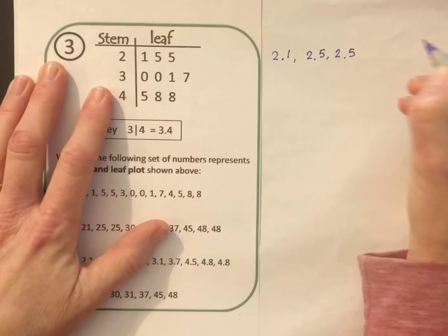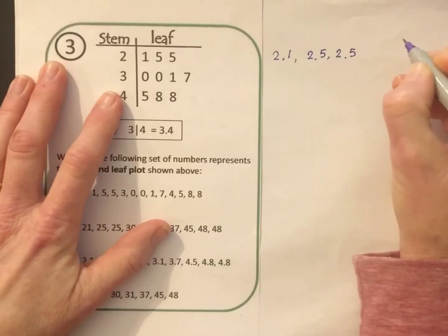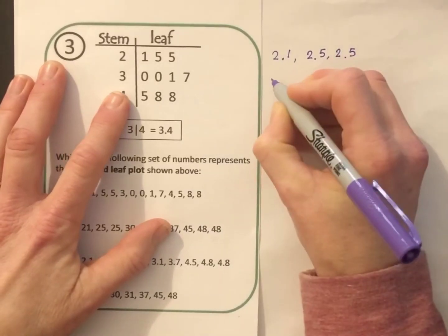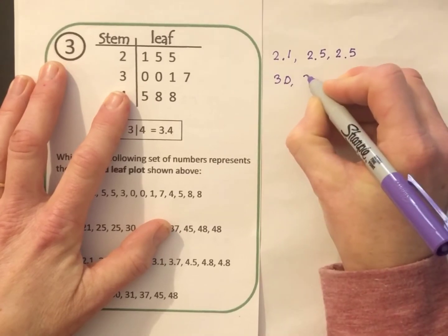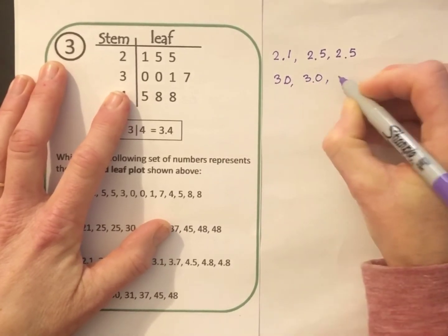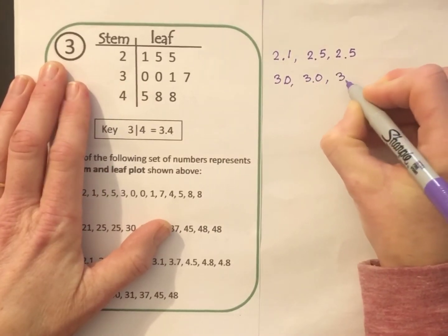We'll go through and write down all of these numbers together. And when I'm finished, you go ahead and you choose the answer on your own. The next stem is 3. Remember, this isn't a 30. This is a 3 point. So I'll go through and write the numbers 3.0 or 3, another 3.0, 3.1, and 3.7.